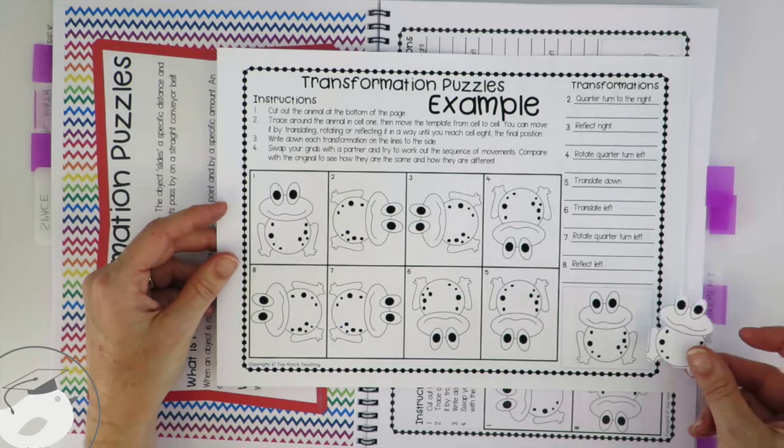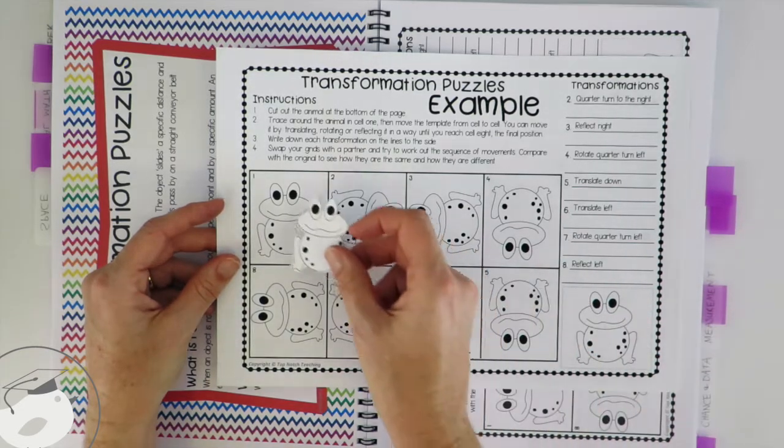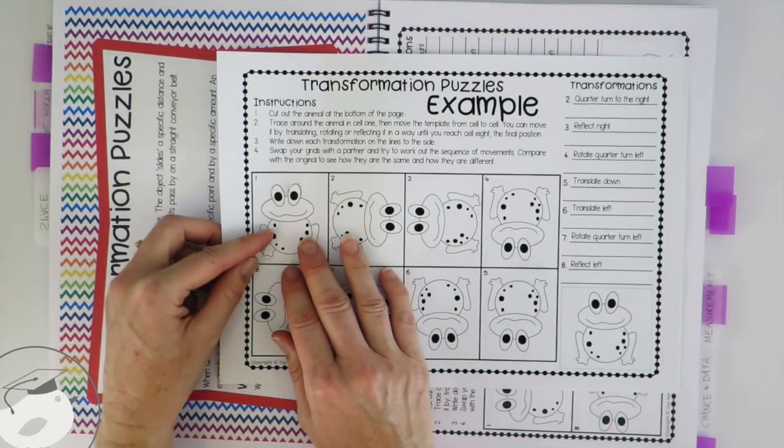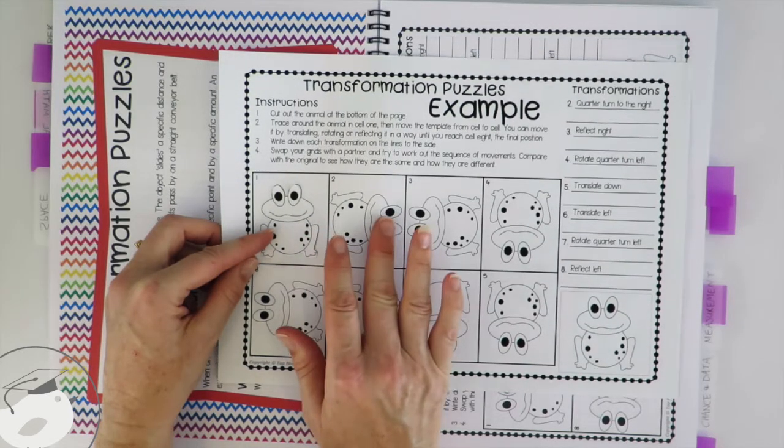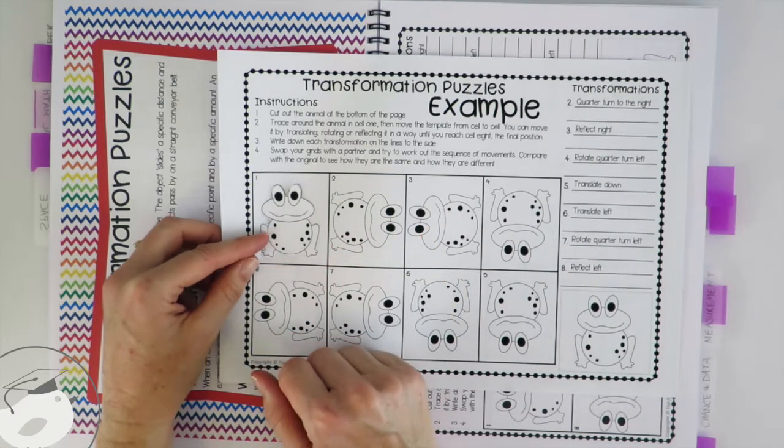Pretty much how they work is you cut out the little shape at the bottom of the page and then they trace around the animal in one cell and then they need to move the animal to cell number two by either translating, rotating, or reflecting it.